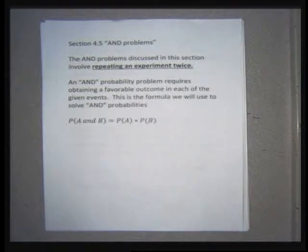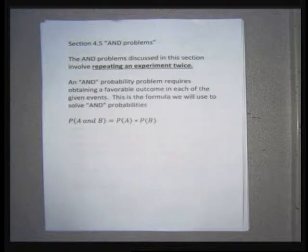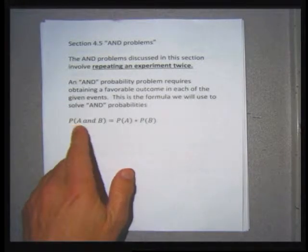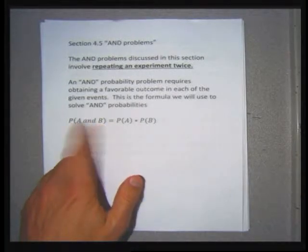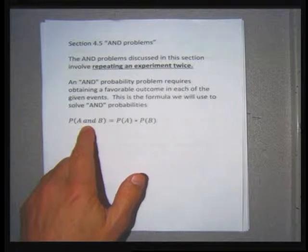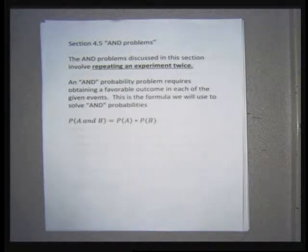In this section, every problem is going to have multiple experiments, whereas in the last section on OR problems, we only did one experiment — we rolled a dice one time, spun a spinner one time, or picked one card. In this section it's going to be multiple experiments. The formula is really easy: the probability of experiment A followed by experiment B both happening successfully equals the probability of A times the probability of B.